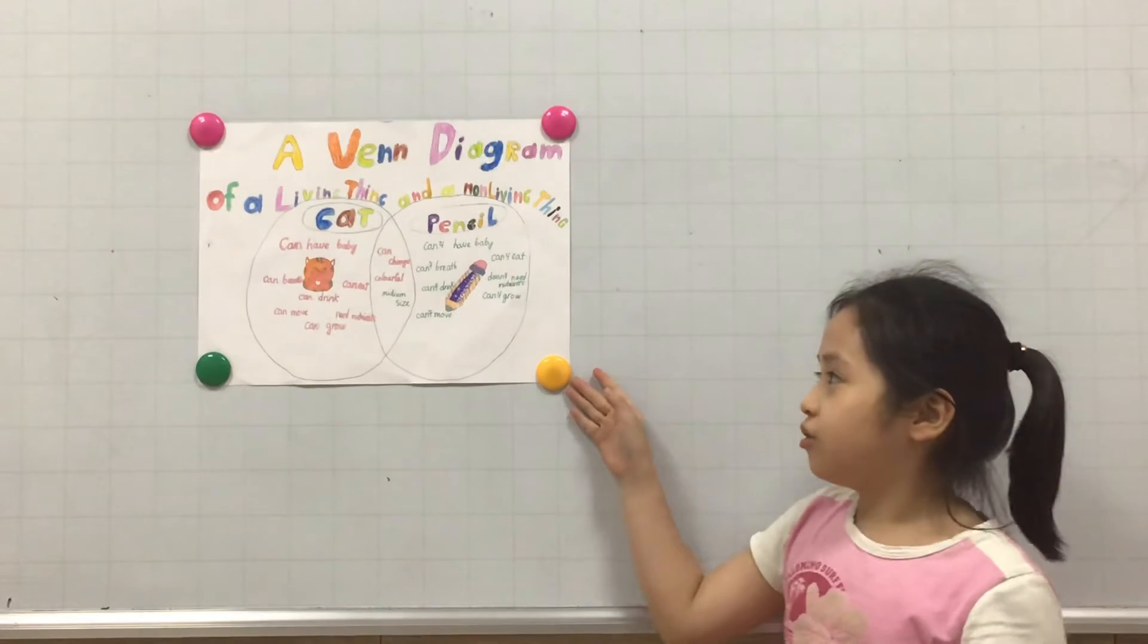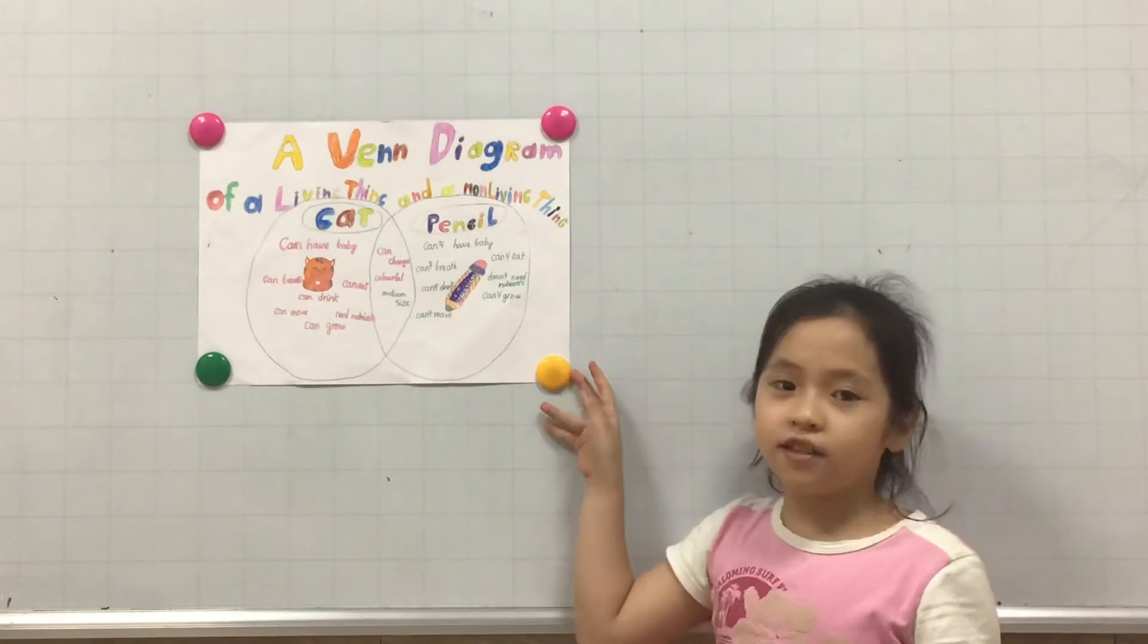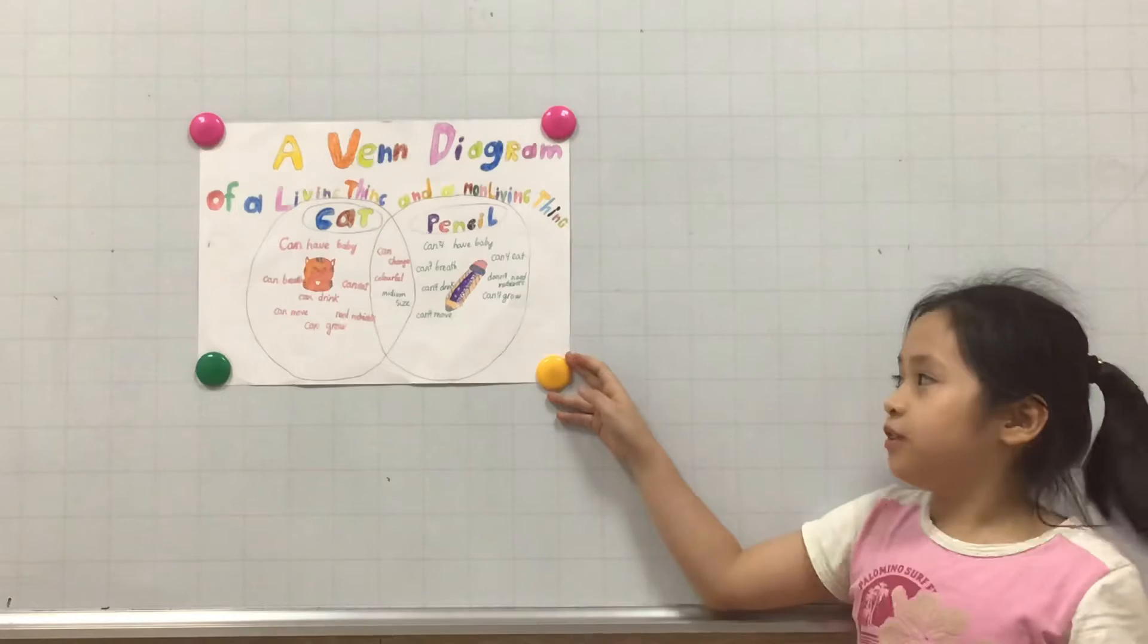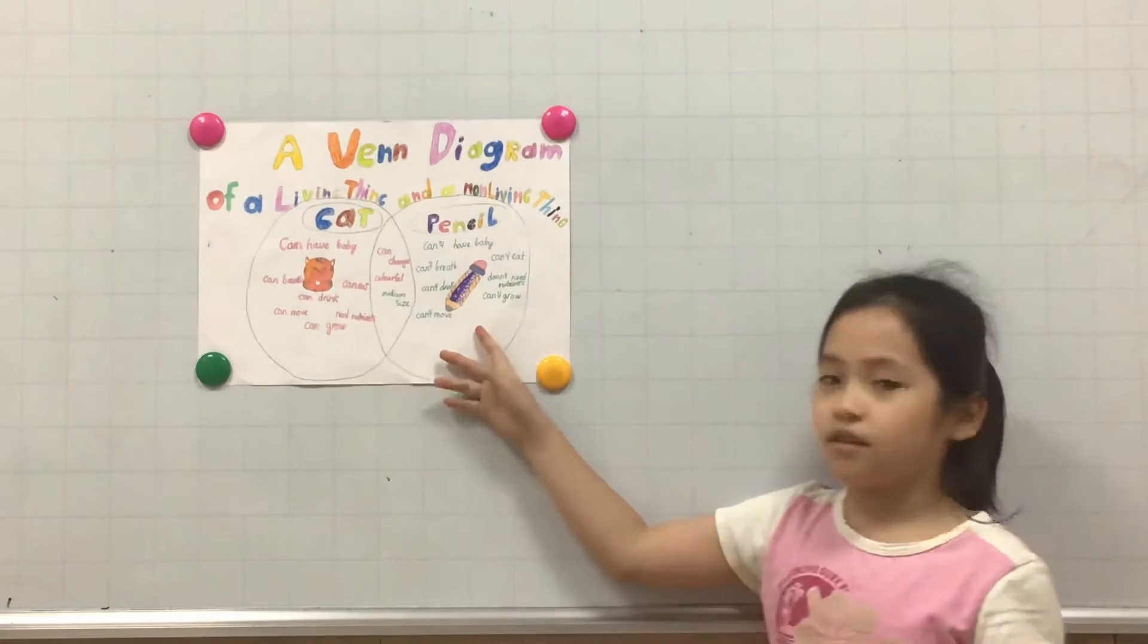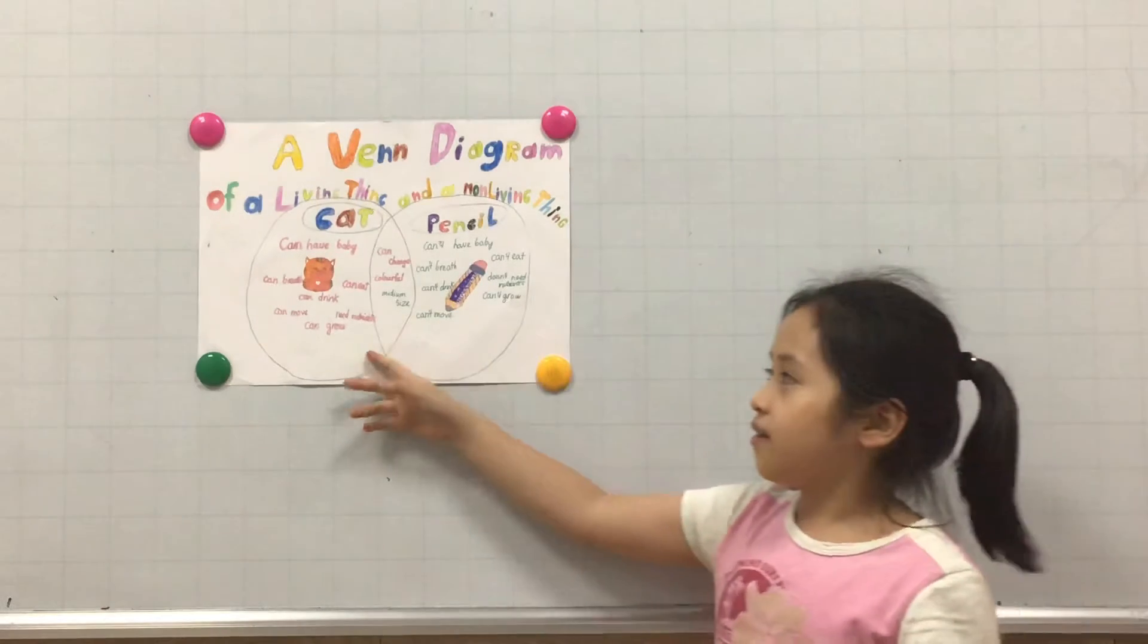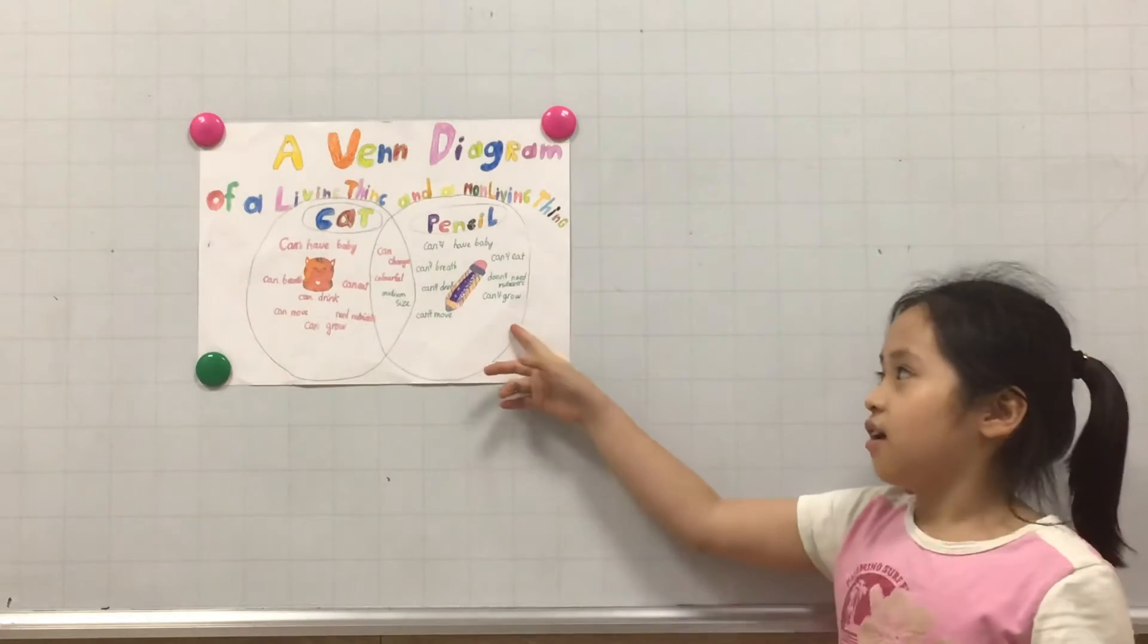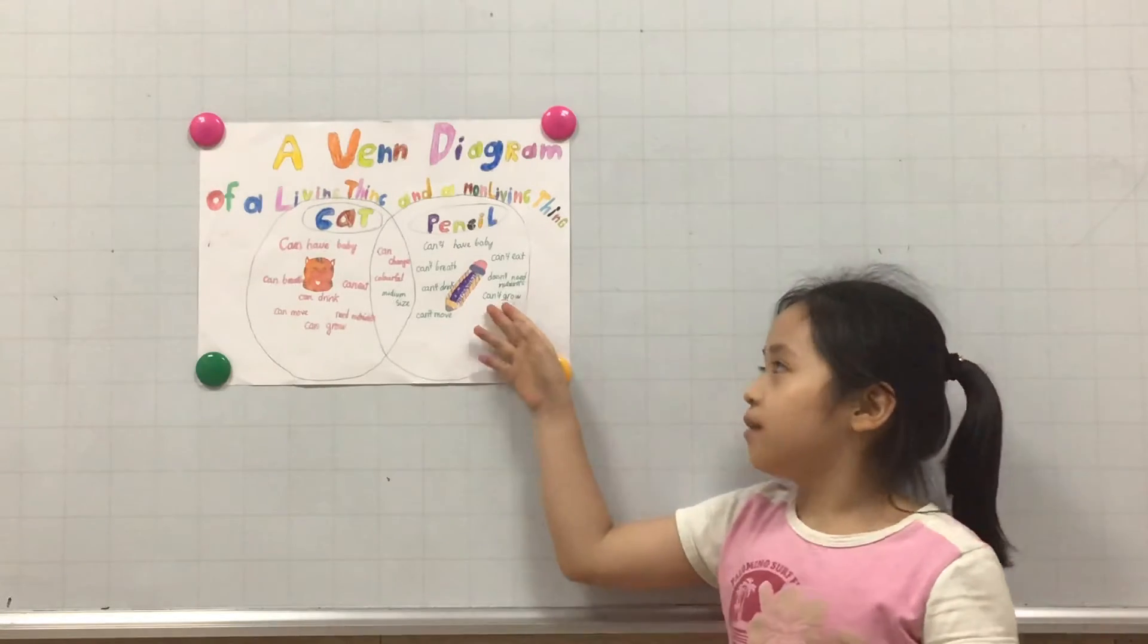The Venn Diagram tells you about the differences and similarities between a living thing and a non-living thing. The living thing is a pet, and the non-living thing is a pencil.